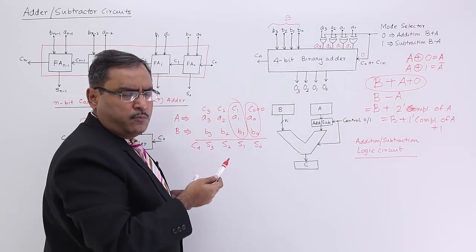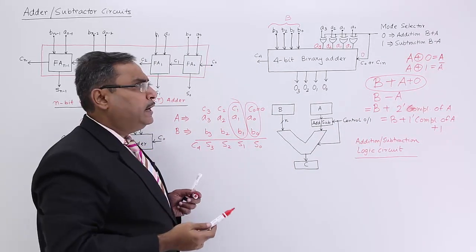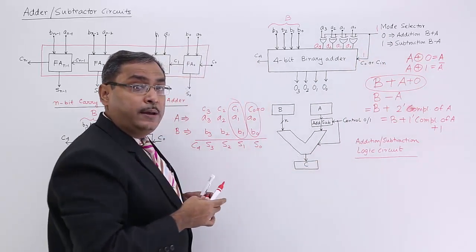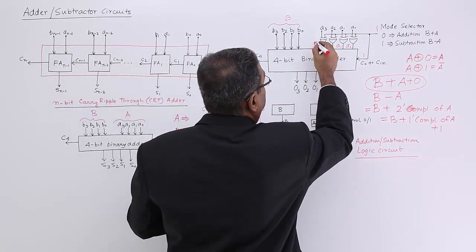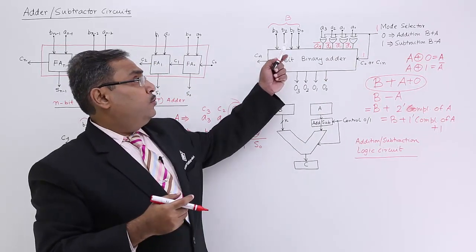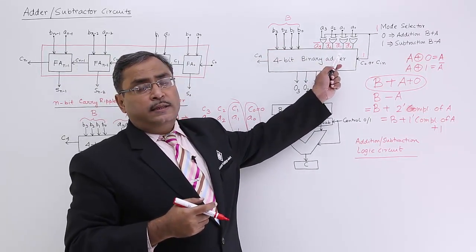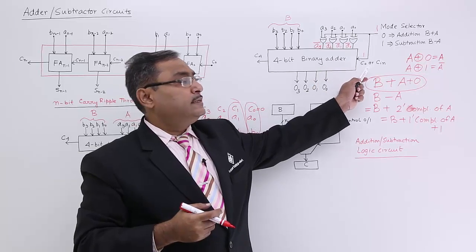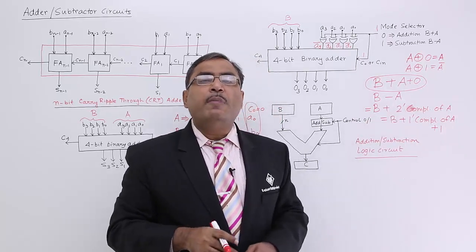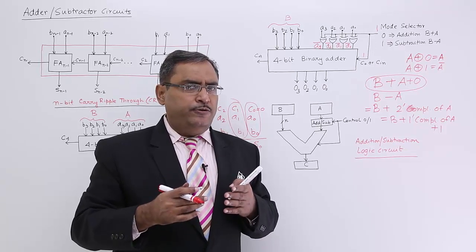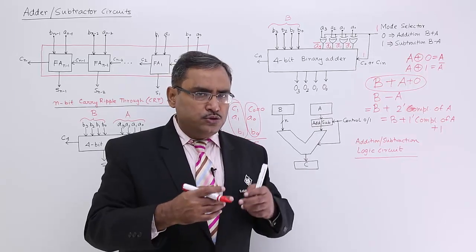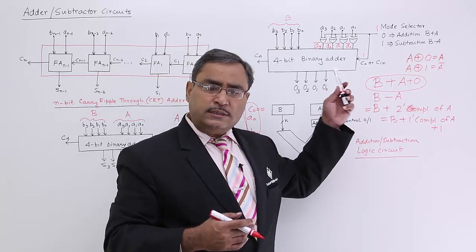Now let us go for mode selector value equal to 1. Then 1 will come down, and since A XOR 1 equals A bar, the bits will become complemented: A3 bar, A2 bar, A1 bar, A0 bar. So this is B, this is the 1's complement of A, and plus 1 comes from the initial carry. So B plus 1's complement of A plus 1 means B minus A. In the same circuit, just by introducing this mode selector line with values 0 and 1, we can do addition or subtraction.